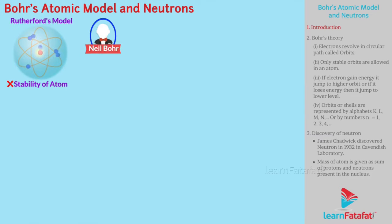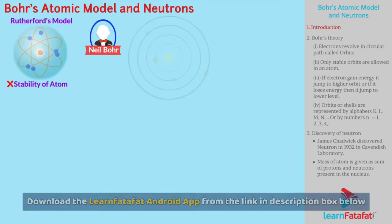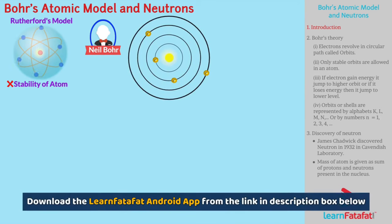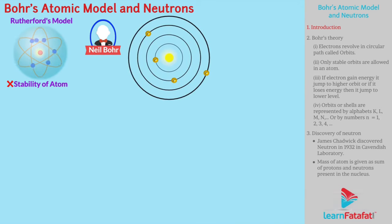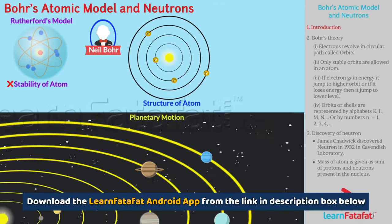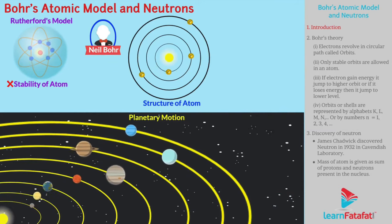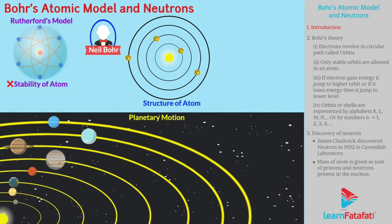Niels Bohr made a modification in Rutherford's model and presented an advanced version of the atomic model. Bohr compared the structure of atoms with planetary motion — just as the planets revolve around the sun, electrons revolve around the nucleus.